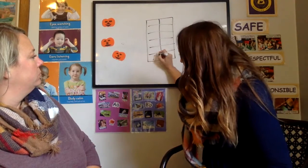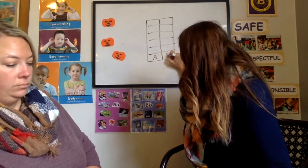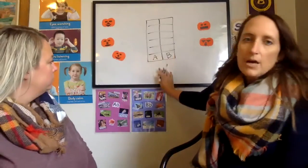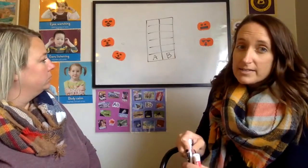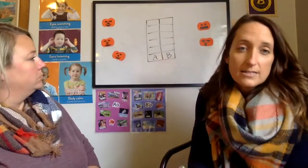And down here, I'm going to put an A, and over here, I'm going to put a B, and then this is going to help us keep track of how many of each letter we find because behind our pumpkins, there are letter A's and letter B's.